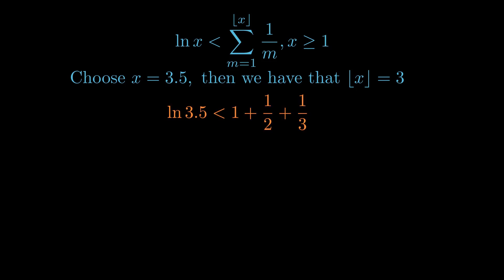And then we have that the natural logarithm of 3.5 will be less than 1 plus 1 over 2 plus 1 over 3. Now let's bring back the sets we defined initially and the prime counting function. For x equal to 3.5, we have that P subscript 3.5 contains the numbers 2 and 3, because those are the prime numbers less than or equal to 3.5. Since the set consists of only two elements, π(3.5) will be equal to 2.